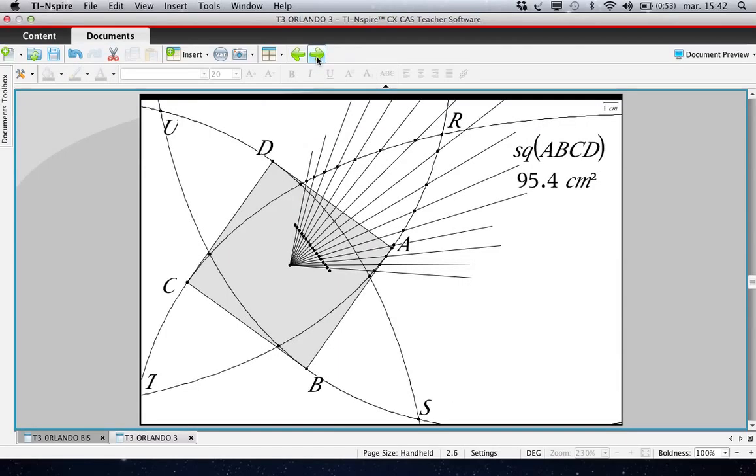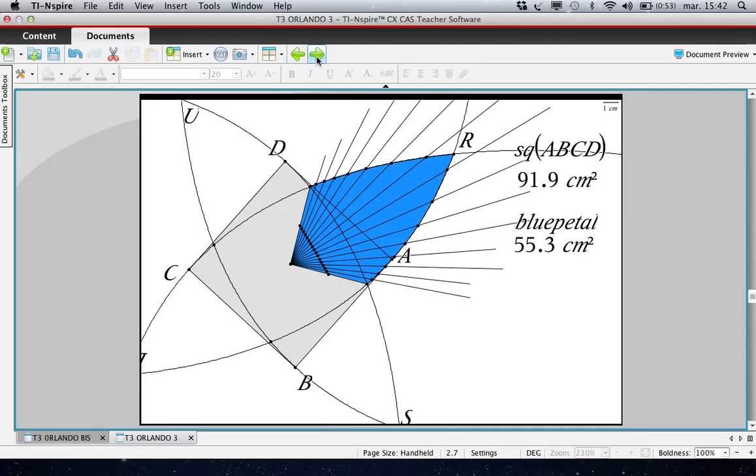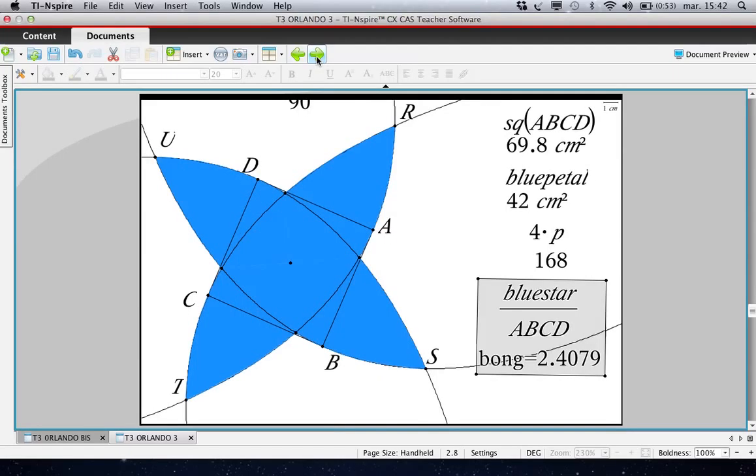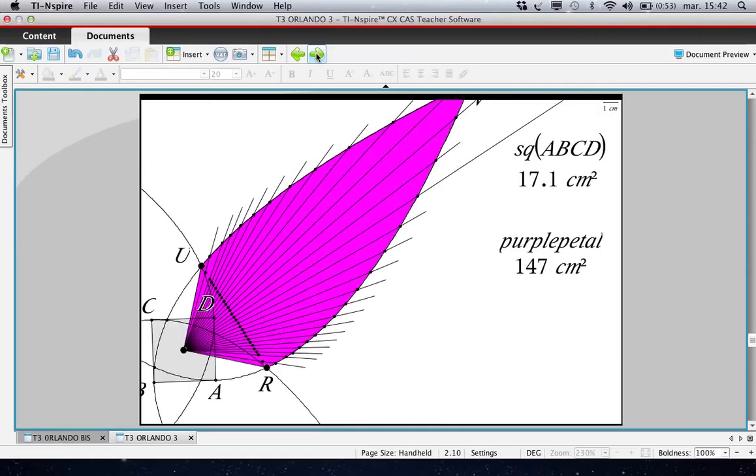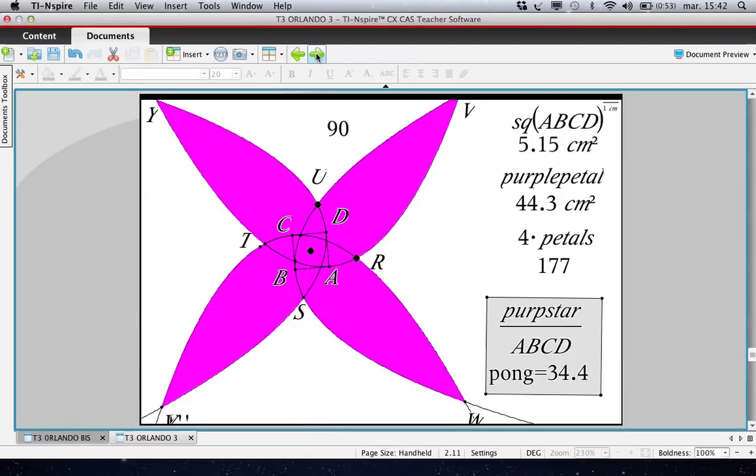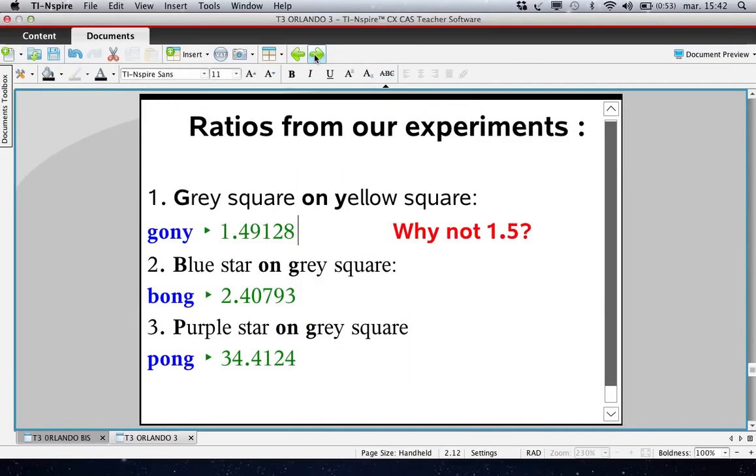Same technique for this petal, and we obtain a ratio which is this one, between the area of the blue star and the initial triangle. And for the biggest star, same technique, a long work but easy to do. You see the result is this one. So we can collect all this data and try to find some pattern. I didn't find them.